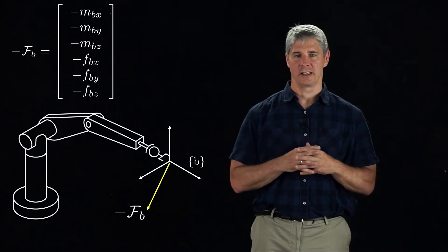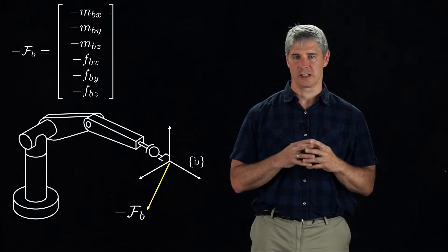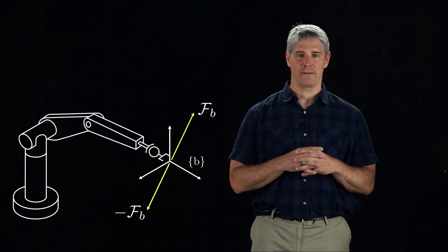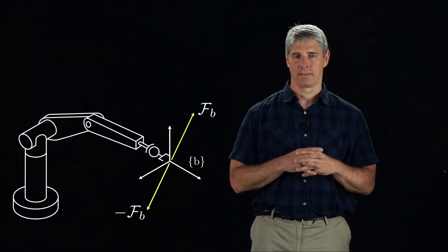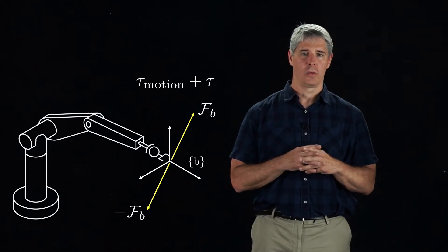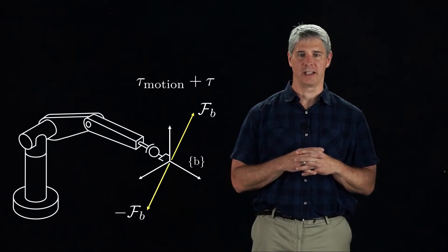If we want the robot to continue to track the planned trajectory despite this disturbance wrench, the robot's motors must create a wrench Fb to balance the disturbance wrench. Therefore, the joint torque should be tau motion plus tau, where we need to know how Fb relates to tau.